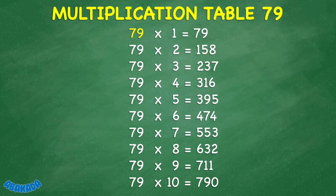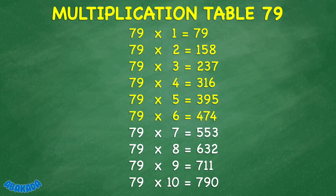79 times 1 equals 79. 79 times 2 equals 158. 79 times 3 equals 237. 79 times 4 equals 316. 79 times 5 equals 395. 79 times 6 equals 474. 79 times 7 equals 553.